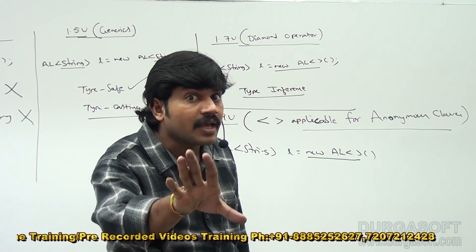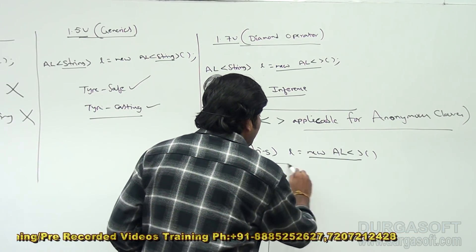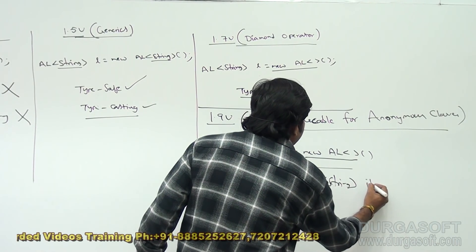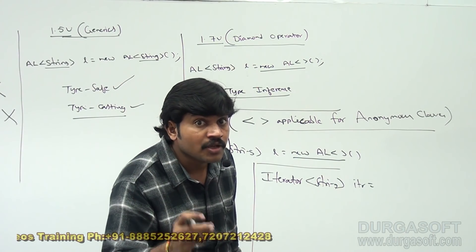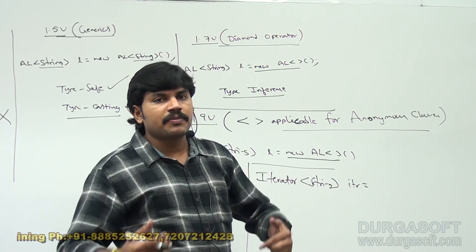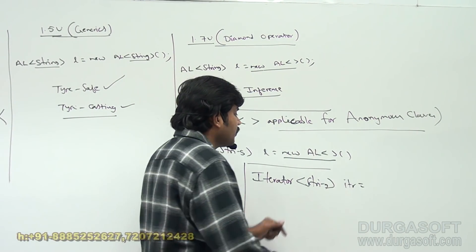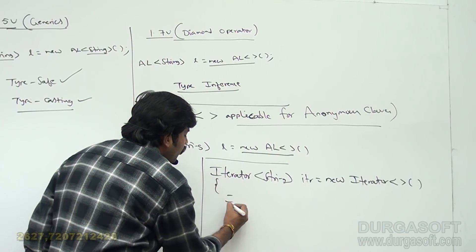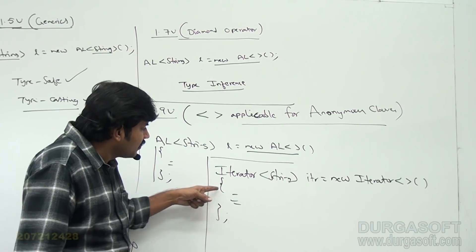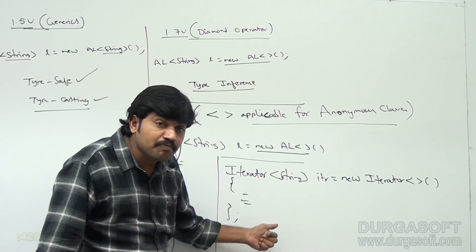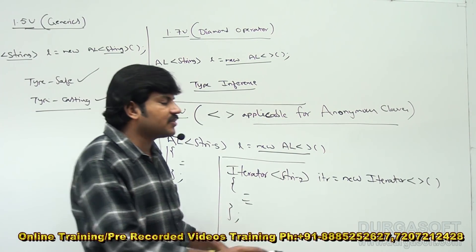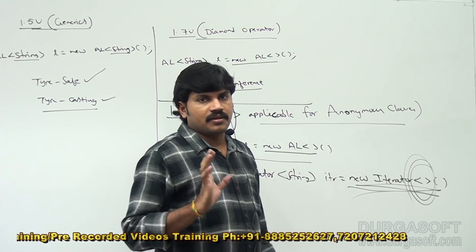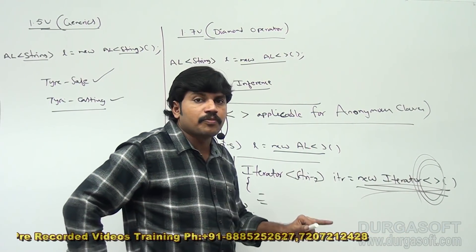From Java 1.9 onwards, the diamond operator is applicable for anonymous inner classes also. For example, if I write: ArrayList<String> l = new ArrayList<>(){...}, I am creating a child class (anonymous class) of ArrayList with no name, and creating an object for that anonymous class. Similarly, for an anonymous implementation of the Iterator interface, the diamond operator can now be used. This facility came from Java 1.9 onwards.